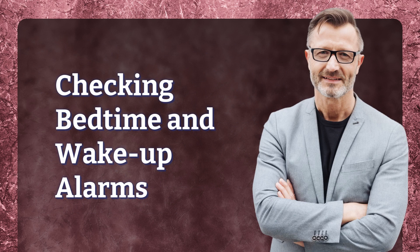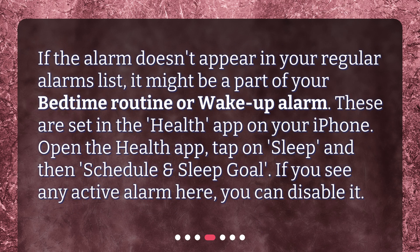Checking bedtime and wake up alarms. If the alarm doesn't appear in your regular alarms list, it might be a part of your bedtime routine or wake up alarm. These are set in the health app on your iPhone. Open the health app, tap on sleep, and then schedule and sleep goal. If you see any active alarm here, you can disable it.